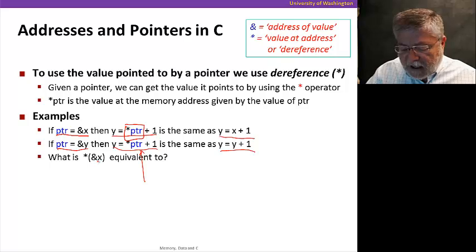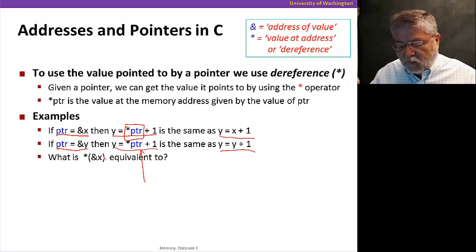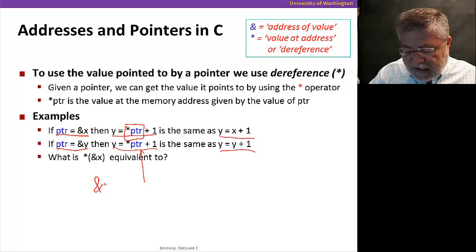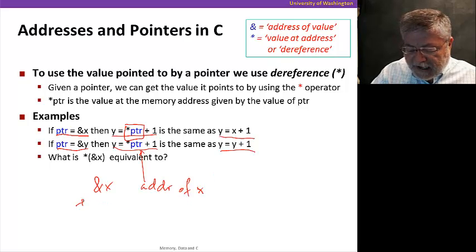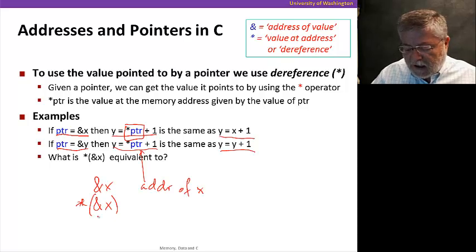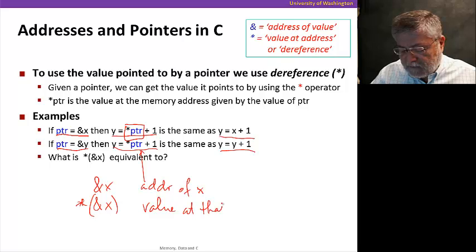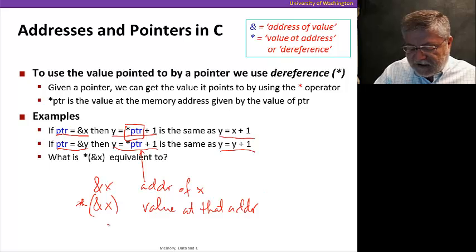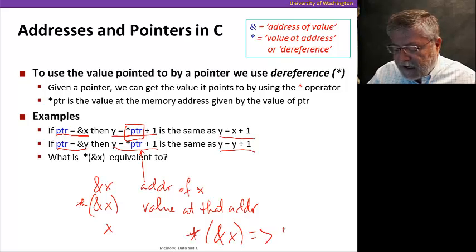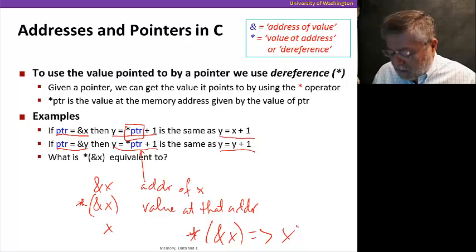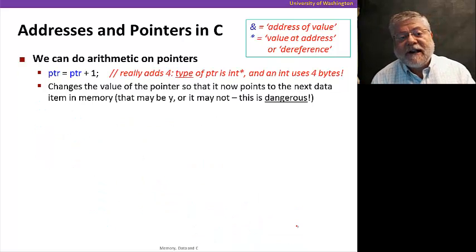Okay. Last example on this slide. Star ampersand x. What is that equivalent to? Well, again, ampersand x is just the address of x. Okay? But when we dereference that address using the star, we now get the value at that address. Well, what is the value at that address? Well, that's just x. So, in fact, star ampersand x is the same as writing just x. Okay? Good. Now, let's go on to some more interesting examples.